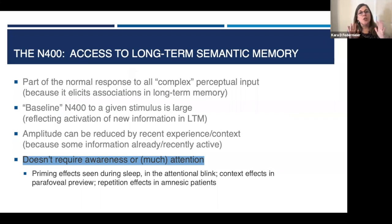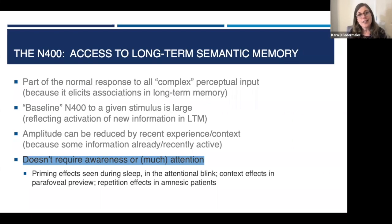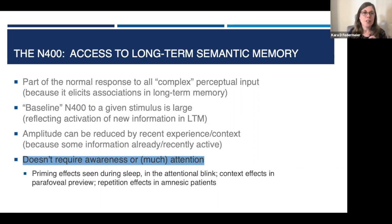Graded sensitivity to context is another robust feature of comprehension as revealed by the N400. Part of the reason these effects are so ubiquitous is because the basic N400 effects obtain even when people cannot explicitly report the manipulations or even the stimuli themselves. Priming effects are seen in some stages of sleep, during the attentional blink, and context effects are seen for words in parafoveal preview. N400 repetition effects can be seen in amnesic patients who cannot report the repetitions. This tells us that important aspects of how the brain accesses long-term memory in response to perceptual input are relatively obligatory and not particularly attention-demanding.